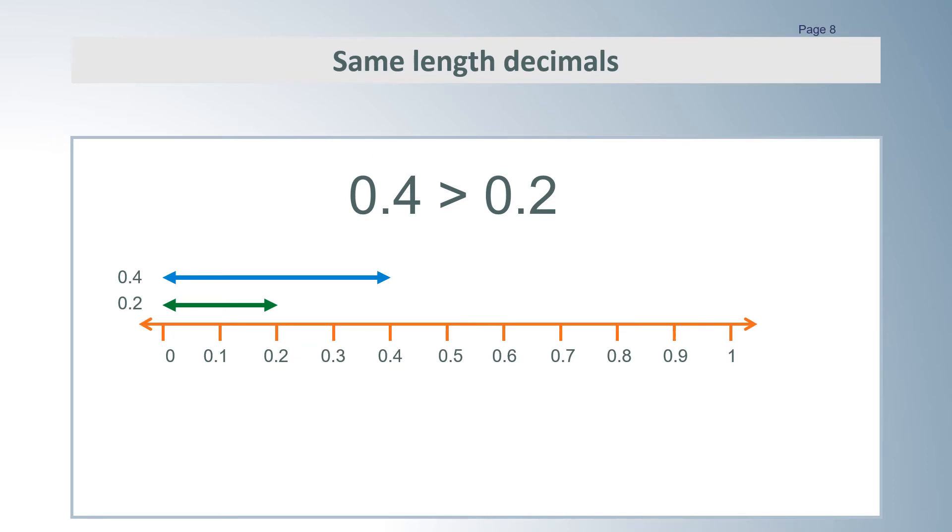And here we can see the two numbers on a number line. Each tick represents 0.1 or 1 tenth. 0.4 is to the right of 0.2 on the number line, which shows that 0.4 is greater than 0.2.